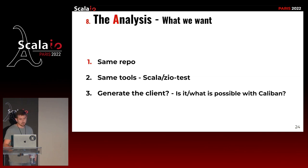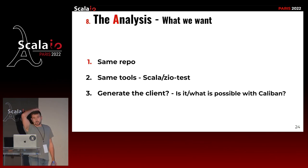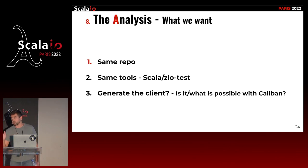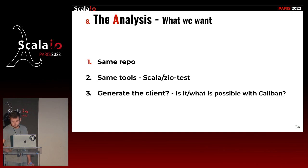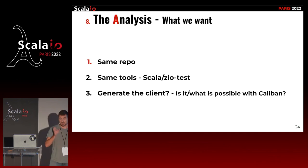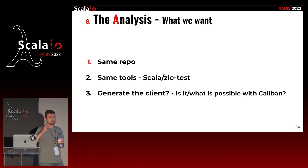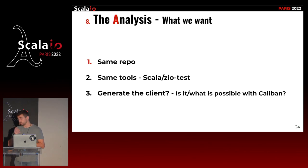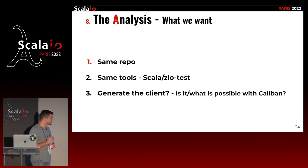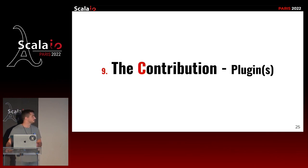What is possible with Caliban? Caliban was already able to generate the schema out of your server code. And Caliban also had an SBT plugin that could generate a GraphQL client out of the schema. So can we merge both — generate the client directly from the server code? The answer was yes, it was already possible, but it was not easy to do. That's where my contribution comes in.